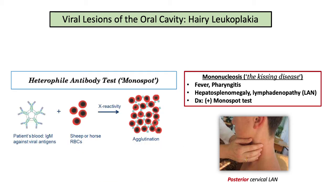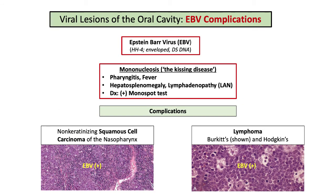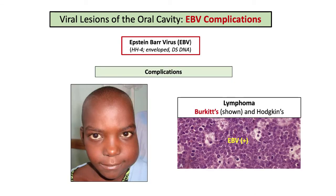EBV mononucleosis can be diagnosed with a positive monospot test, also referred to as a heterophile test, characterized by agglutination of sheep red blood cells. You should be familiar with other complications of EBV infection related to oral pathology, including both nasopharyngeal carcinoma and lymphoma. Endemic or African Burkitt's lymphoma presents with a rapidly enlarging jaw mass, and 100% of these patients have had EBV exposure.